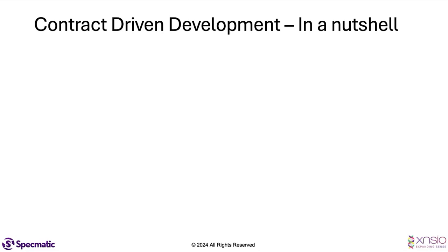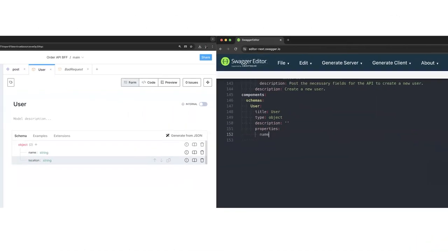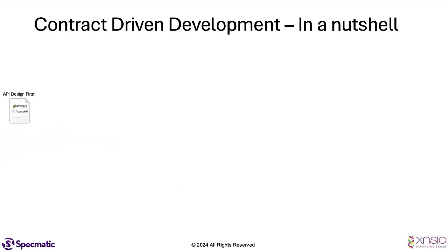Let's look at contract-driven development in a nutshell. We believe in an API design-first approach where the provider and consumer of the APIs come together, they collaboratively design the API, they capture the agreement in an OpenAPI or an AsyncAPI specification. Once we have agreed on the specification, we put it in a central Git repo. That's our single source of truth — this is what everybody would refer to going forward.